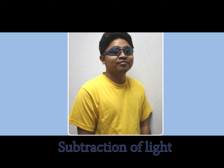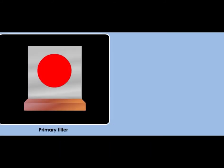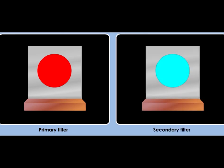All other colors will be absorbed. The absorption of colored lights by a filter is known as subtraction of colored lights. There are two types of filters: primary filters and secondary filters.